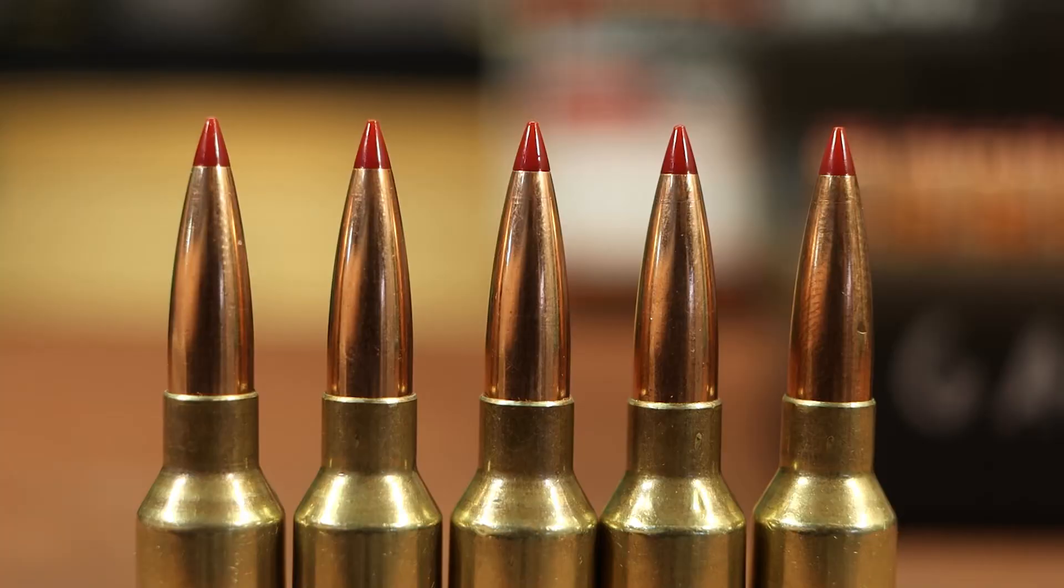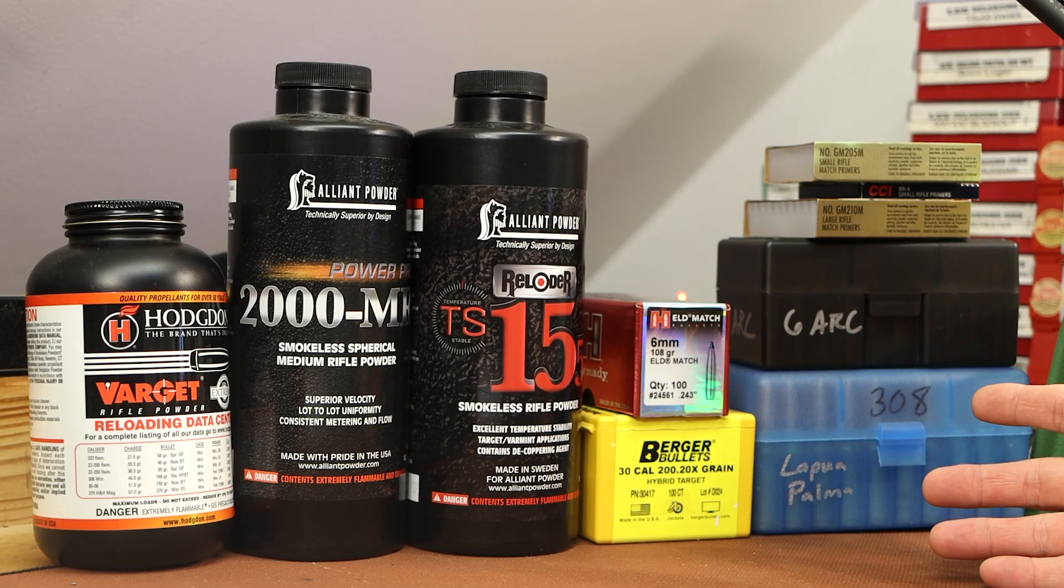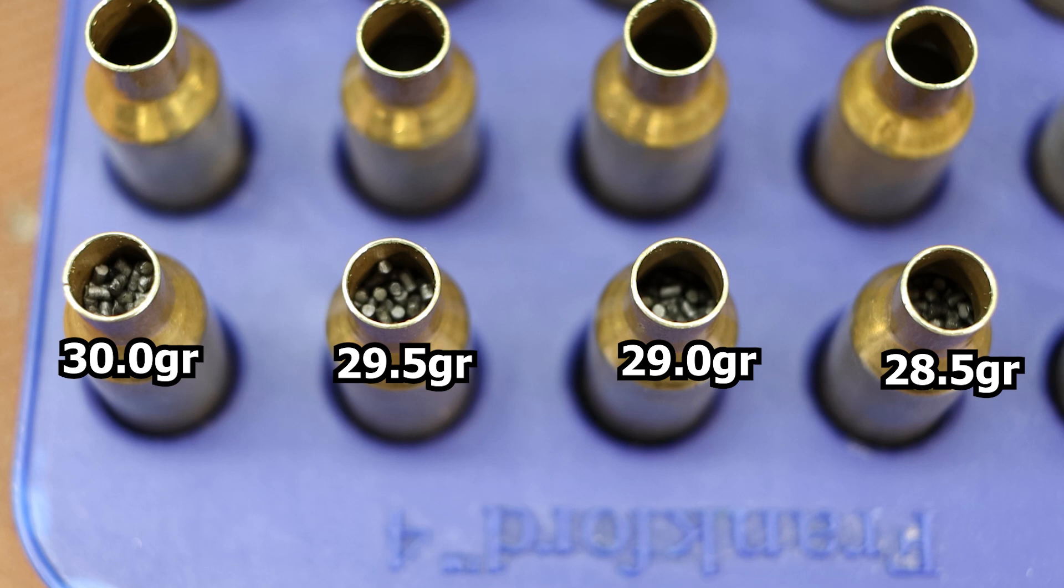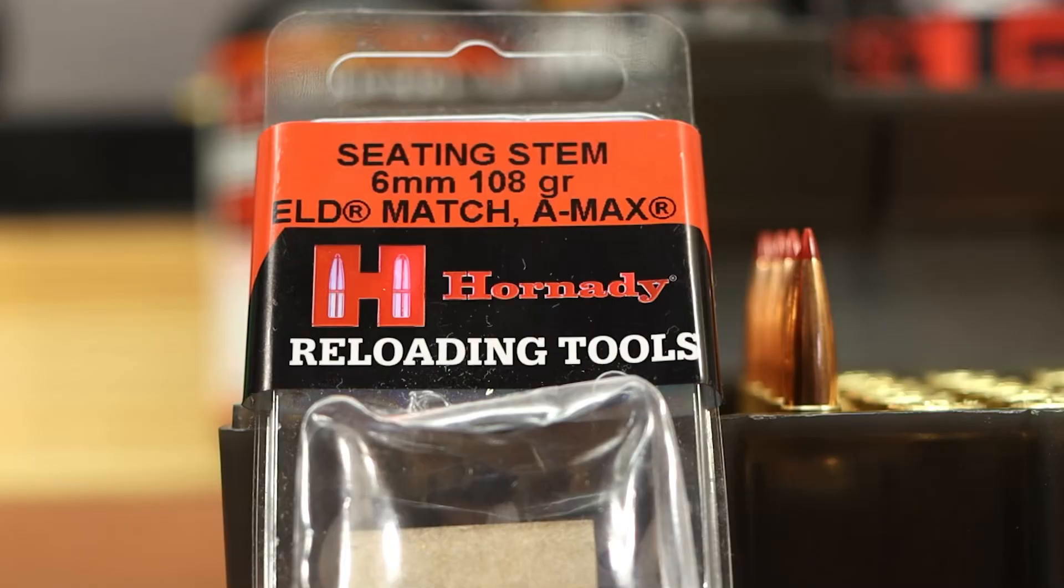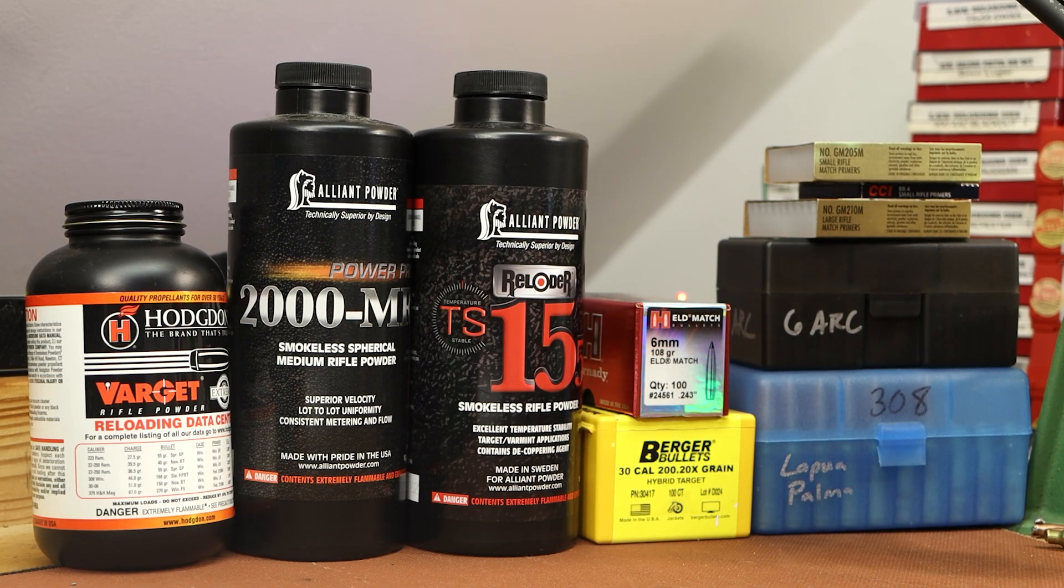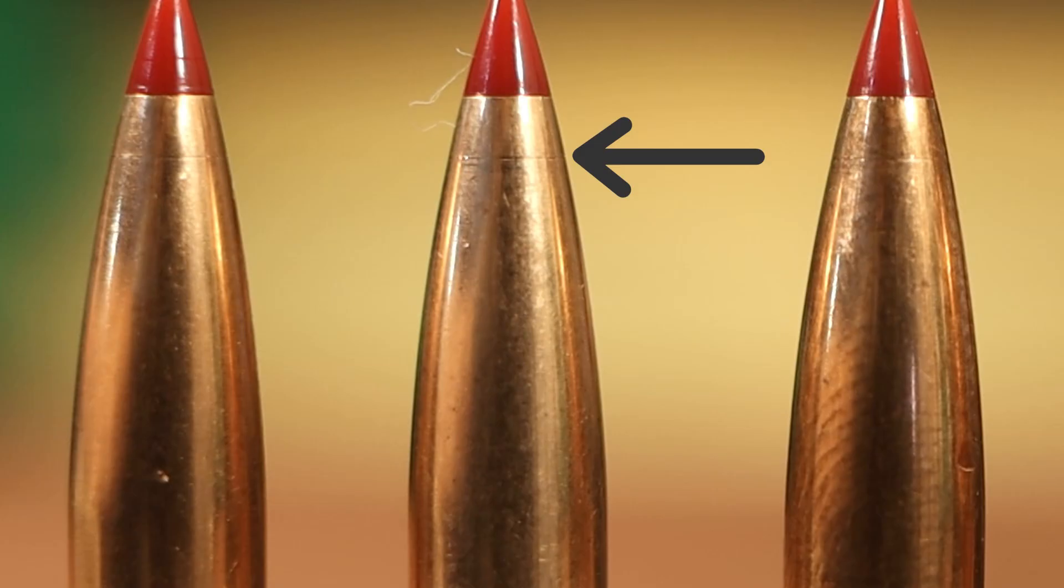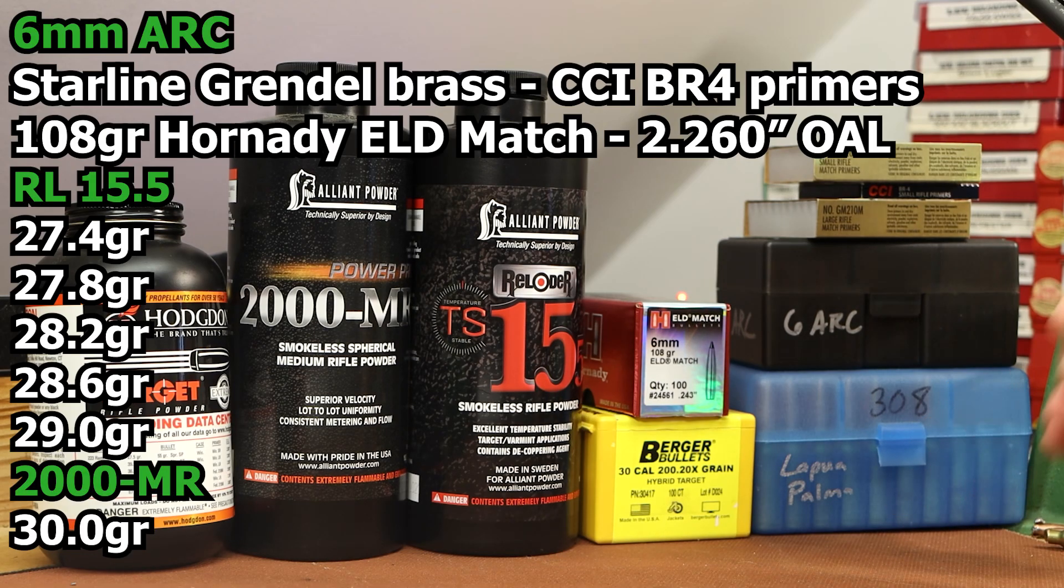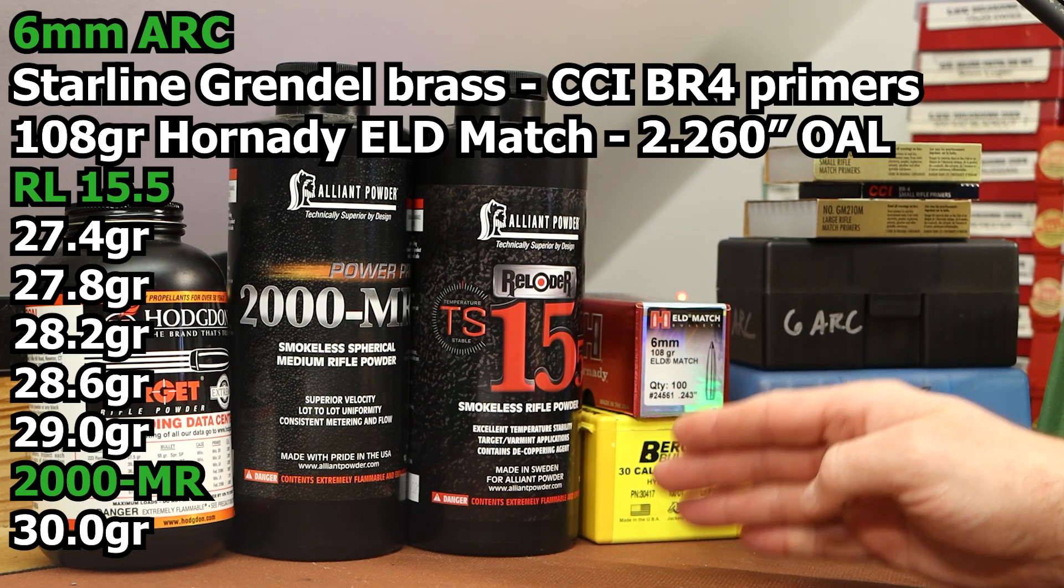The next loads for today in six millimeter ARC are with the 108 grain Hornady ELD Match. With the six ARC we don't have any load data. I basically just weighed out a few charges to see how high we could possibly go. 30.0 and 29.5 were a little fuller than I wanted to see but 29.0 looked like something we could work with. The top charge of 29.0 was definitely very compressed and we got a little bit of a line around the bullet but not too bad.